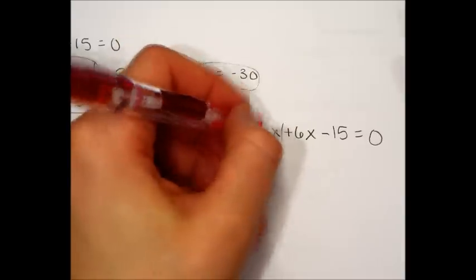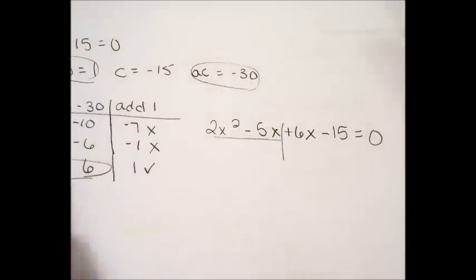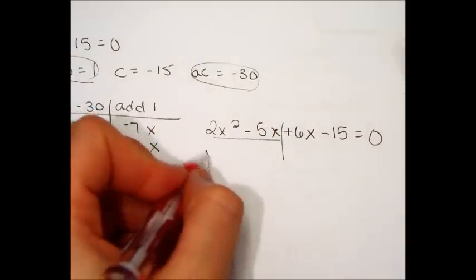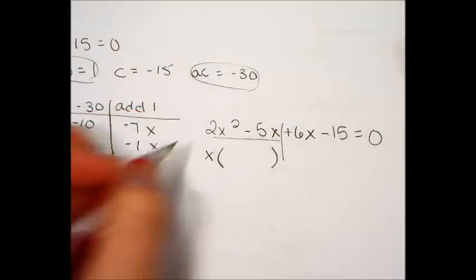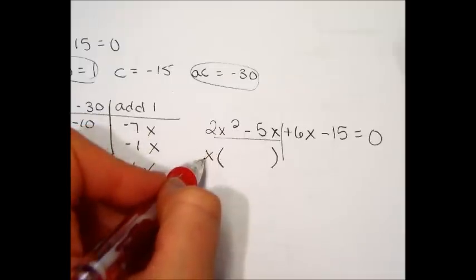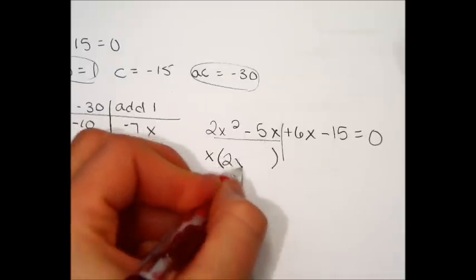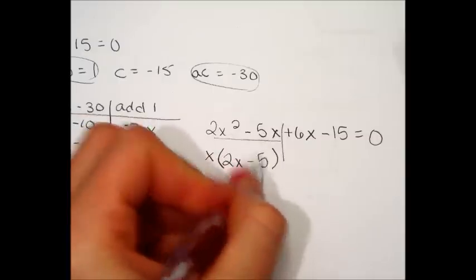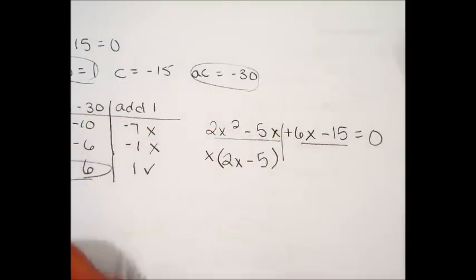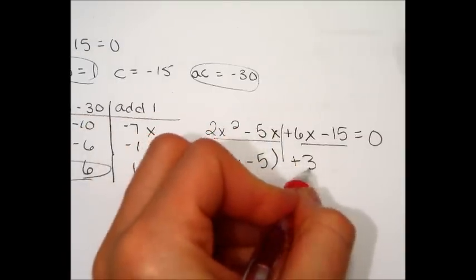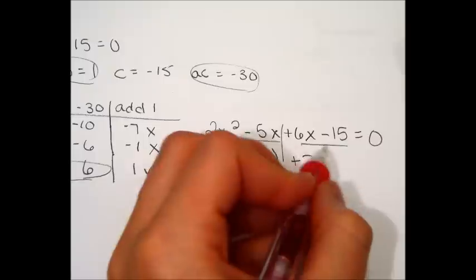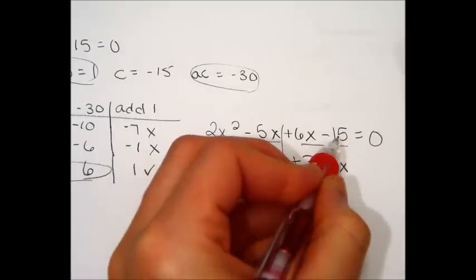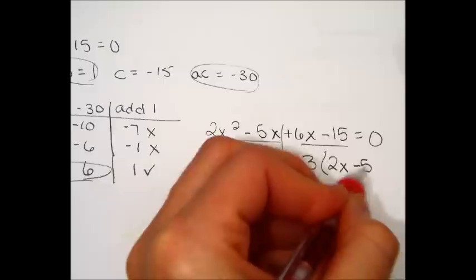Then group them. What's it like in those two? What's the GCF? Just an x. Take out an x. You're left with 2x minus 5. What's common in these two? Hopefully, you know a 3. Divide out a 3, you will end up with 2x. Divide out a 3, you'll end up with minus 5.